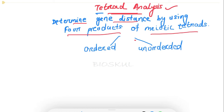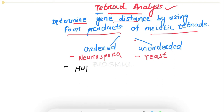Ordered tetrad analysis is studied in Neurospora, and unordered tetrad analysis is studied in yeast. One important point I want to mention is that tetrad analysis is studied in haploid organisms. Neurospora and yeast are haploid organisms.